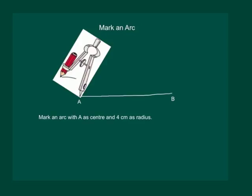We shall also use mark an arc with A as center and 4 cm as radius. That would mean that using a ruler, first open your compass to 4 cm radius so that the distance between the pointed end and the point of the pencil is 4 cm, and then keep it at point A and mark an arc.